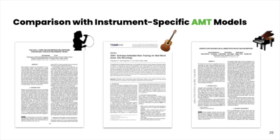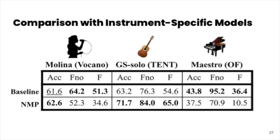Next, we compare how NMP performs when compared to other instrument-specific models for vocals, piano, and guitar. Compared with the vocal-specific model, NMP is comparable but slightly worse in metrics. For guitar, NMP performs substantially better than the guitar-specific model. Finally, for piano, NMP performs significantly worse, but still has relatively good performance overall.